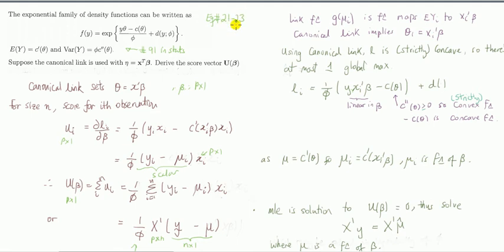In problems 21 to 23, I found the likelihood function, the score function, and the information matrix for various GLMs. Now I'm going to do it in a more general case, leaving discussion for the properties of the likelihood function in relation to the link function.